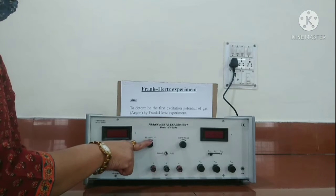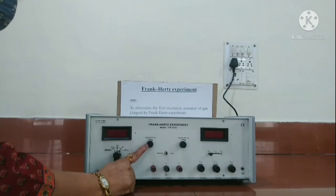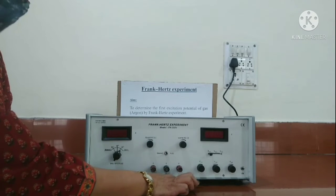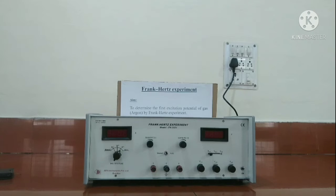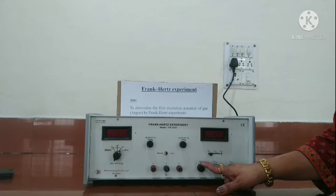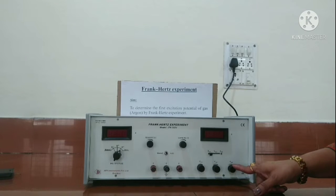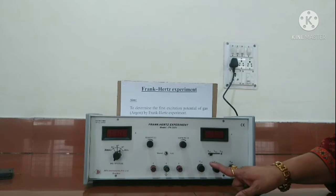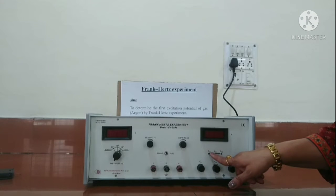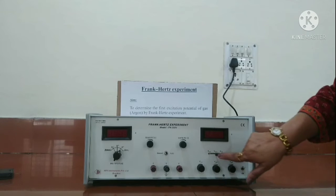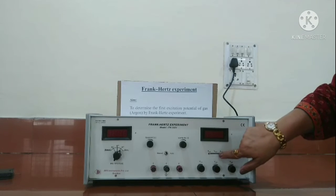This is the filament voltage. We can apply a voltage. Whenever filament voltage is changed, please allow 2-3 minutes for its stabilization. These are the knobs for changing the voltage with respect to G1K or G2A and then G2K. Accordingly, we have to flick this switch for G1K, G2A, and G2K.